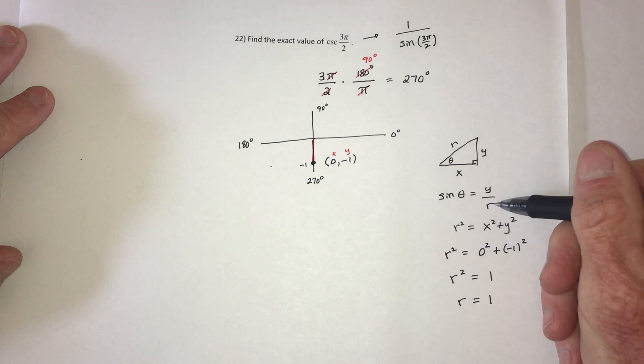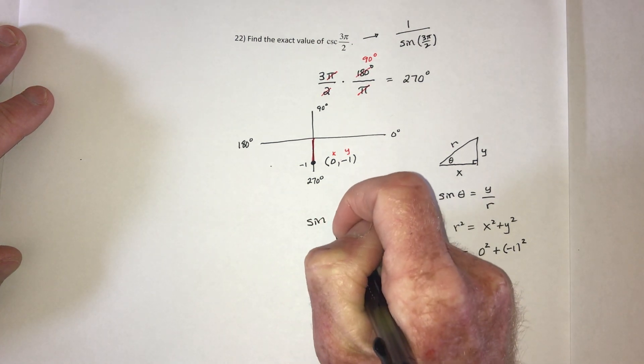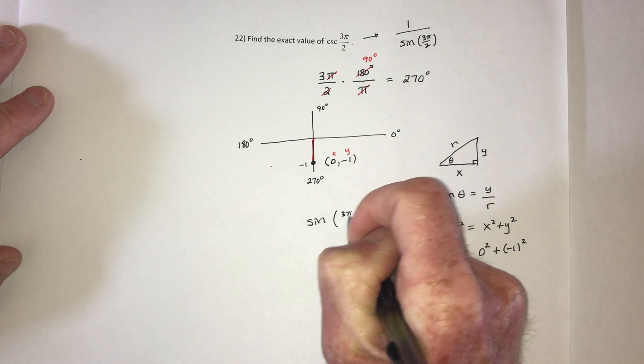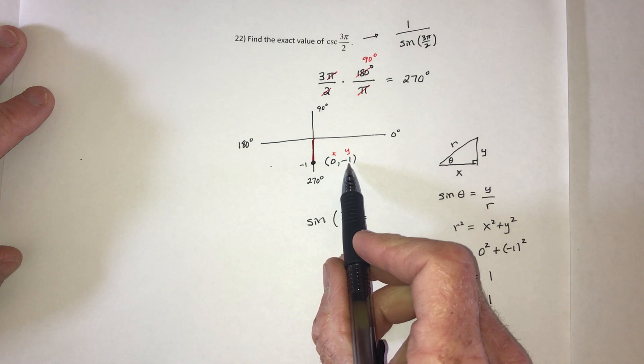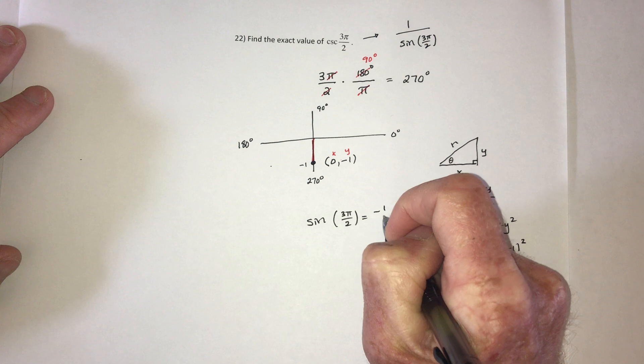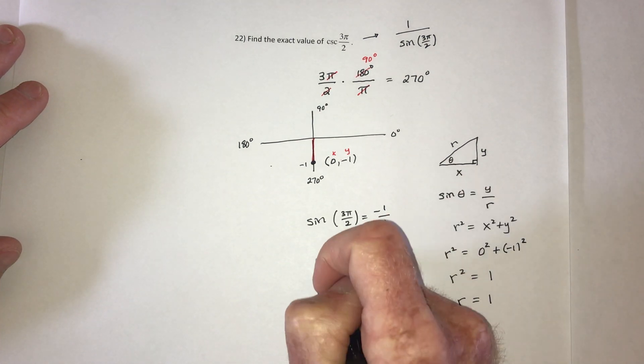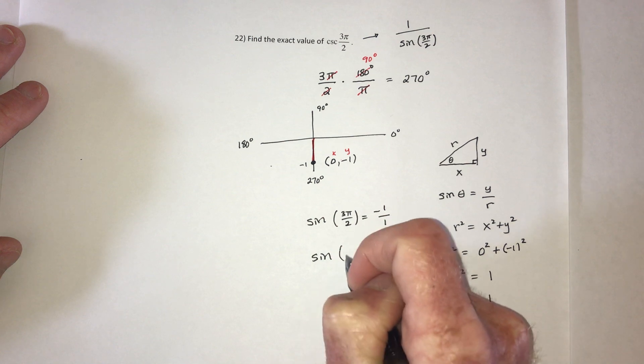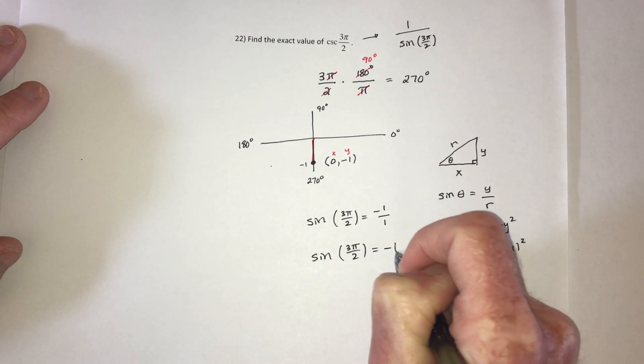So then plug in these. Sine of 3π over 2 will be the y divided by r. So negative 1 divided by 1. Or in other words, sine of 3π over 2 equals negative 1.